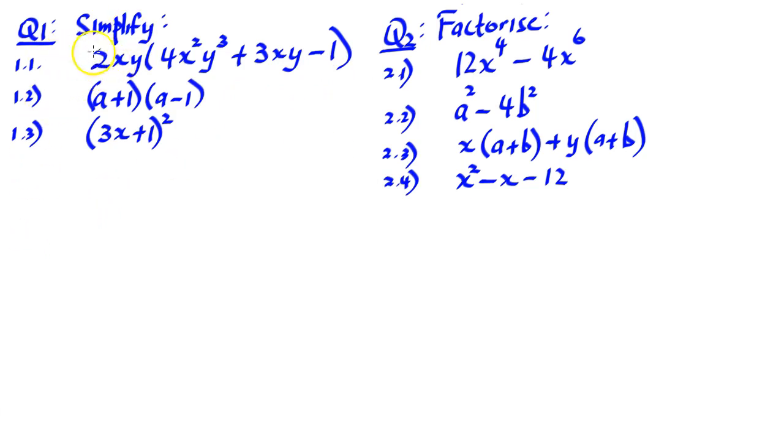Let's look at the first question. Question 1.1 says we must simplify 2xy into 4x squared y cubed plus 3xy minus 1. We want to take that into the brackets. We are distributing, multiplying 2xy into the brackets.